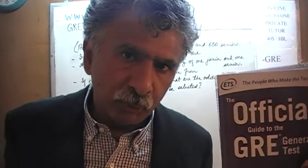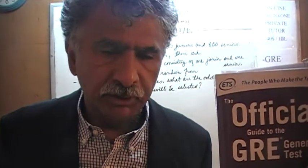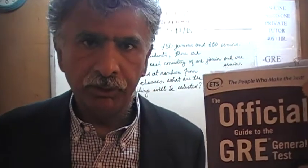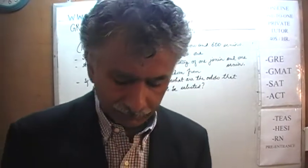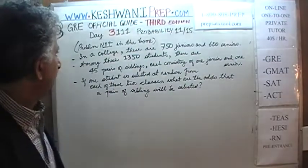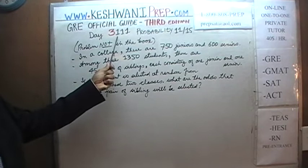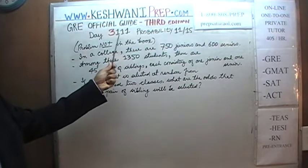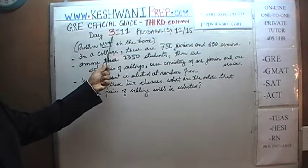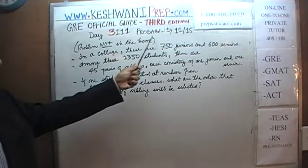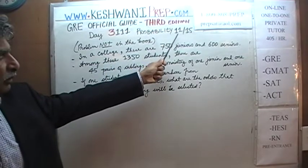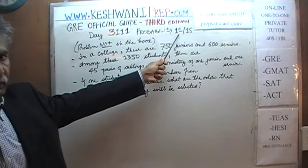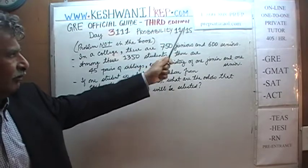If you do not own this book already, purchase one immediately — you're going to need it. Today is our lesson number 111, Day 3111. The 3 signifies that we are in the third edition, day 111. We've been covering the topic of probability, and today we'll have our 11th video — the 11th lesson in the series of 15.